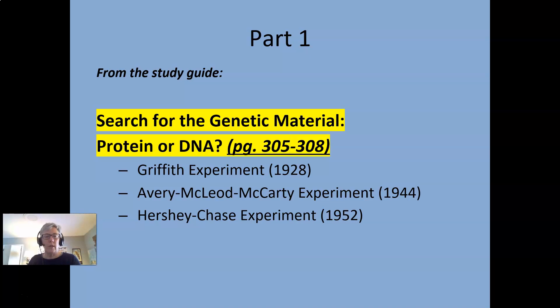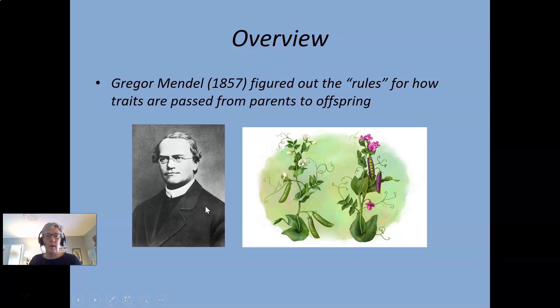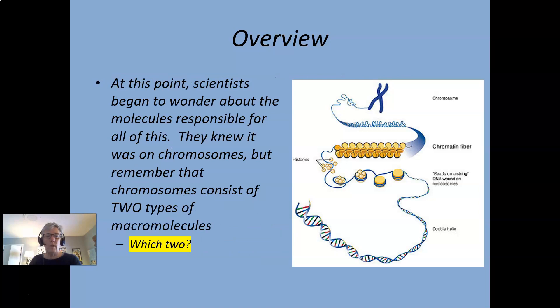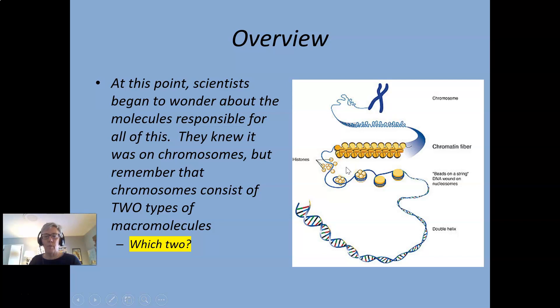There are three experiments we're going to talk about. Quick review: this is Mendel, who figured out that traits are passed along and the rules for how that happens. Then Thomas Hunt Morgan did a lot of work figuring out the chromosomal basis of inheritance — that was Chapter 15, covering meiosis and all of that. So that was known when they started to figure out what was the exact particle causing traits to be passed down. This is a picture of DNA or a chromosome with histone proteins. Chromosomes exist as a complex of DNA and protein, and these proteins are involved in the packaging of the DNA. So the question was: which of those two molecules is actually responsible for passing on traits?